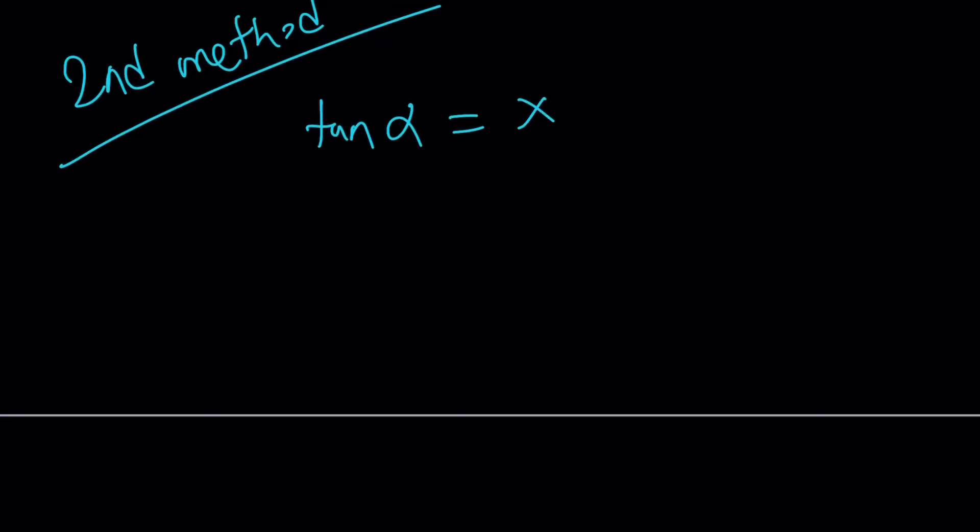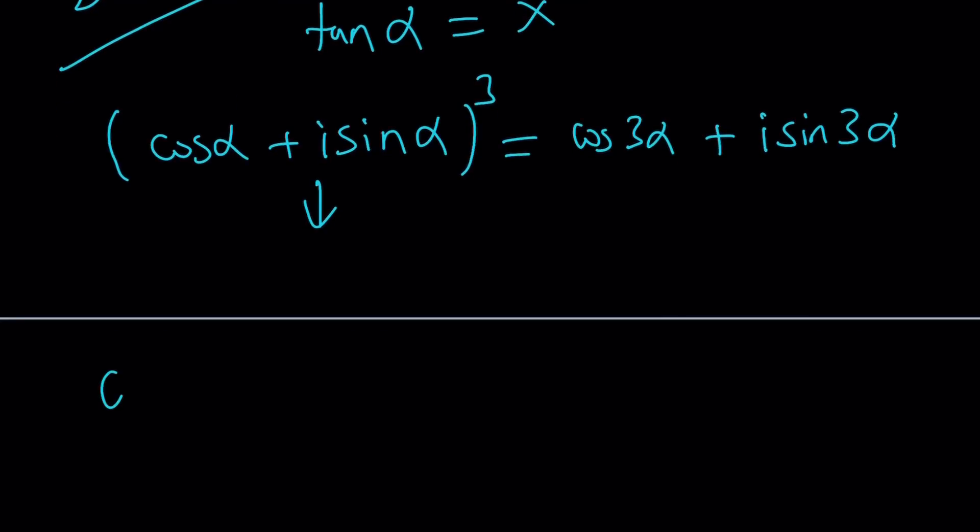But you can use them to find the answer. So here's how it goes. If you go ahead and take cosine alpha plus i sine alpha which is a complex number. You can go ahead and cube it and by the de Moivre's theorem it's going to look like this. If you expand this, this is going to give you a really interesting expression like cosine cubed alpha plus i sine alpha cubed plus 3 cosine alpha times i sine alpha multiply by cosine alpha plus i sine alpha.